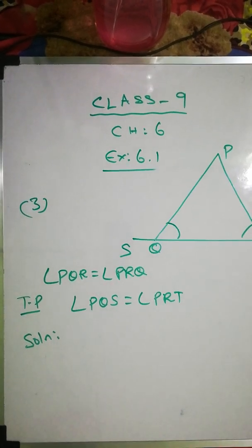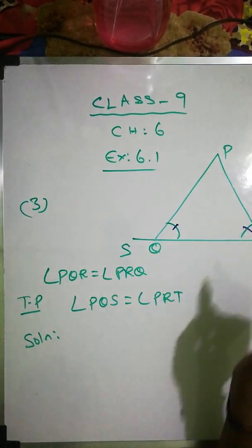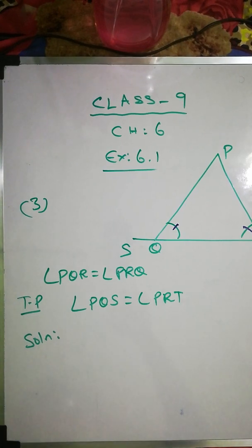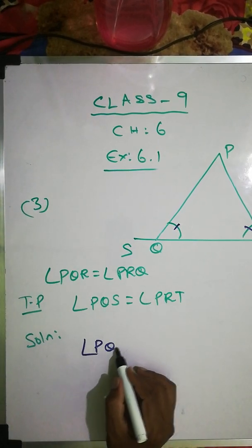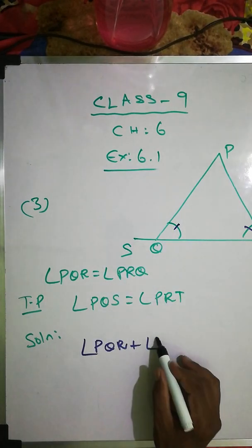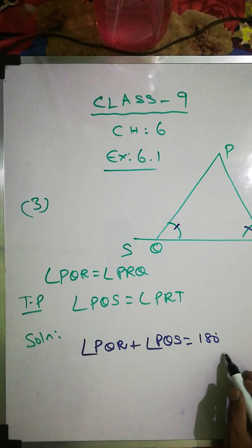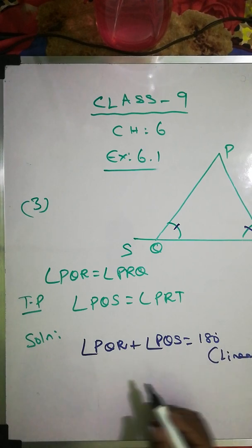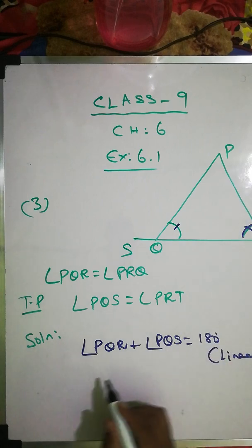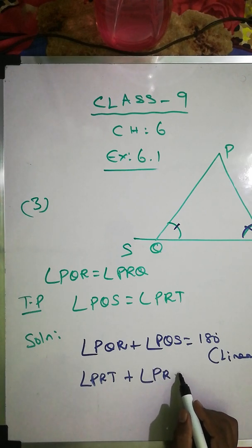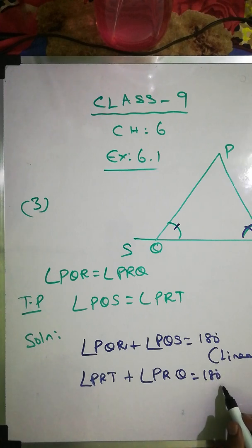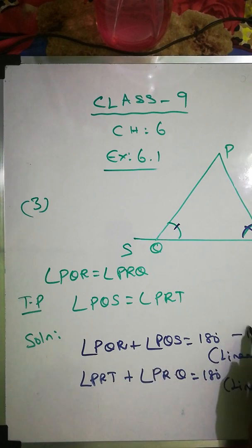Question number 3. In the figure, angle PQR equals angle PRQ. We have: equation 1 — angle PQS plus angle PQR equals 180 degrees (linear pair). Equation 2 — angle PRT plus angle PRQ equals 180 degrees (linear pair).